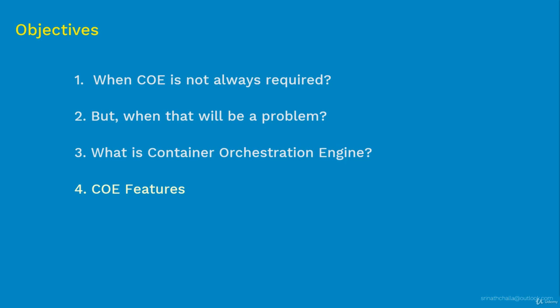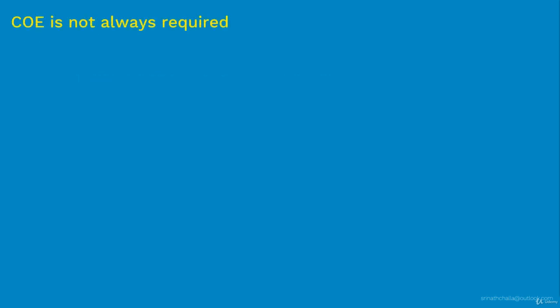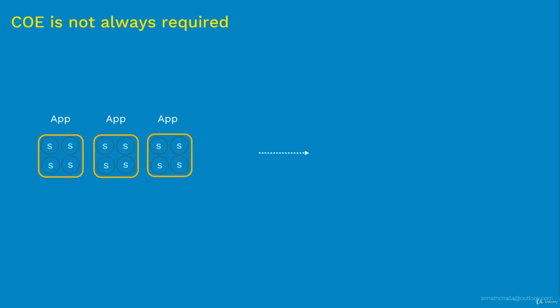Let's start with when we don't require a container orchestration engine. Imagine you're working for a small startup with very few applications — say about three. In this scenario, we can manage and scale those applications manually as per traffic demand with basic tools. I don't see a role for a container orchestration engine in that situation. But the majority of companies are mid-size to large-scale enterprises with hundreds of apps made up of thousands of microservices.